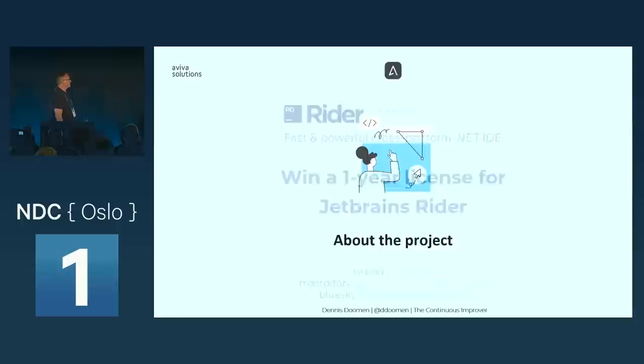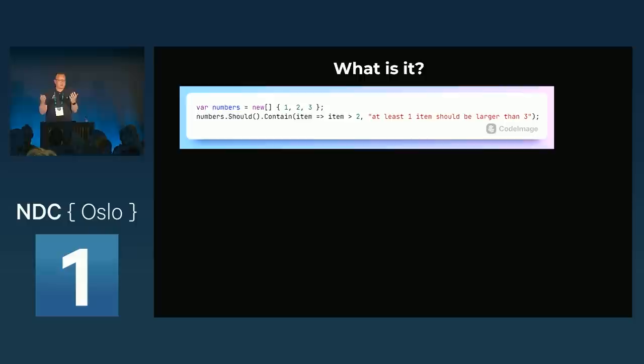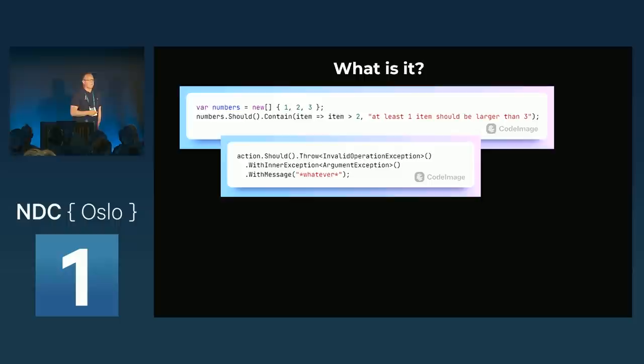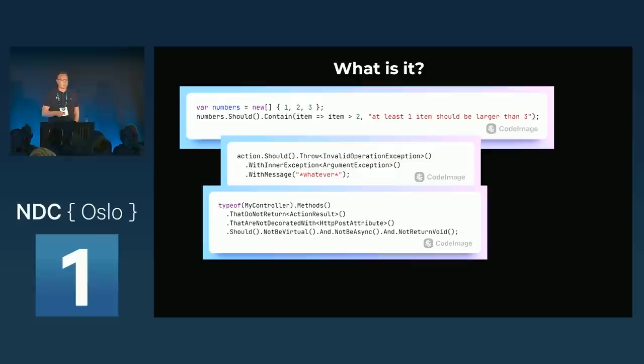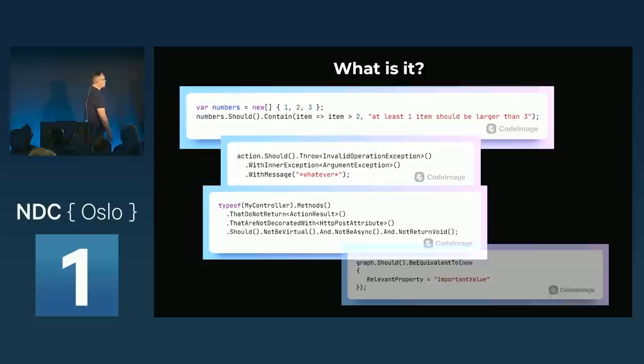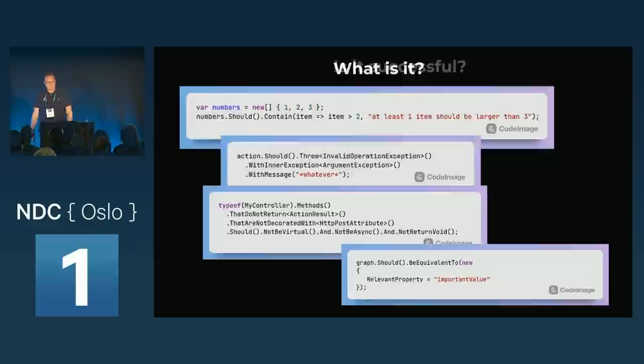So what is the project? It's a fluent API in C# to make your tests a little bit more readable. You can do things like 'should contain', 'should throw invalid operation', some kind of reflection checks to make sure your code complies to certain structures, and the most powerful feature is comparing object graphs with very nice messages.